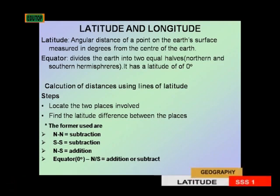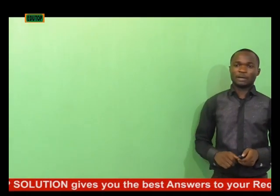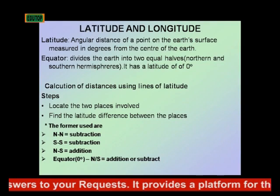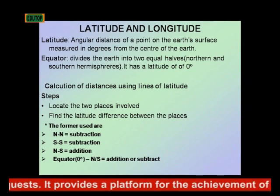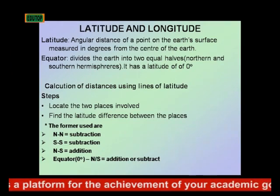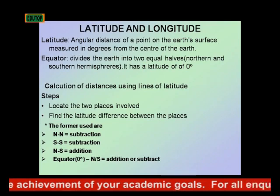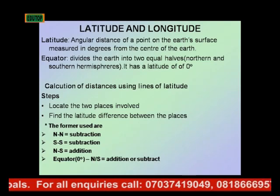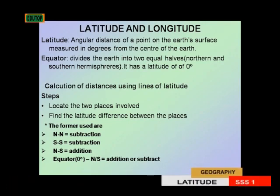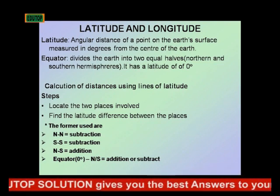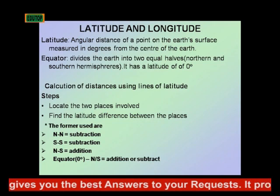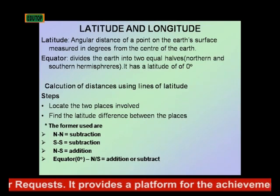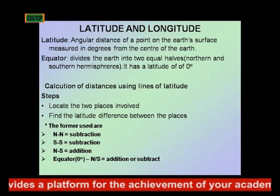The first step is to locate the two places involved. Having located the places, the next step is to find the latitude difference between these two places. If the two places are both north, you subtract one from the other — the smaller from the bigger. And if the two places are both south, subtraction is also involved.